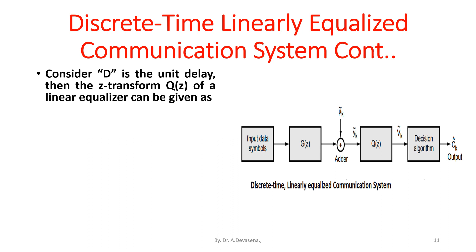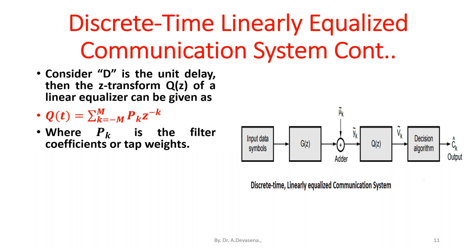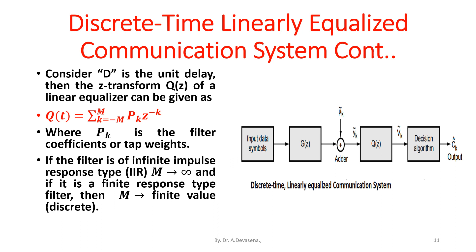Consider D as a unit delay. Then, the Z-transform Q(Z) of a linear equalizer can be given as: Q(Z) = summation from K = −M to M of P_K · Z^(−K), where P_K is the filter coefficients or tap weights. If the filter is of infinite impulse response type, i.e. IIR, the value of M tends to infinity. If it is a finite impulse response type, then M is finite.